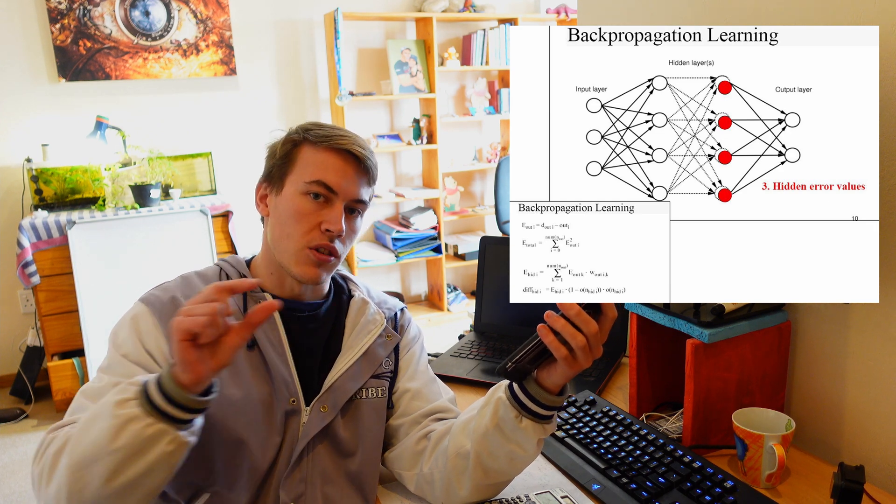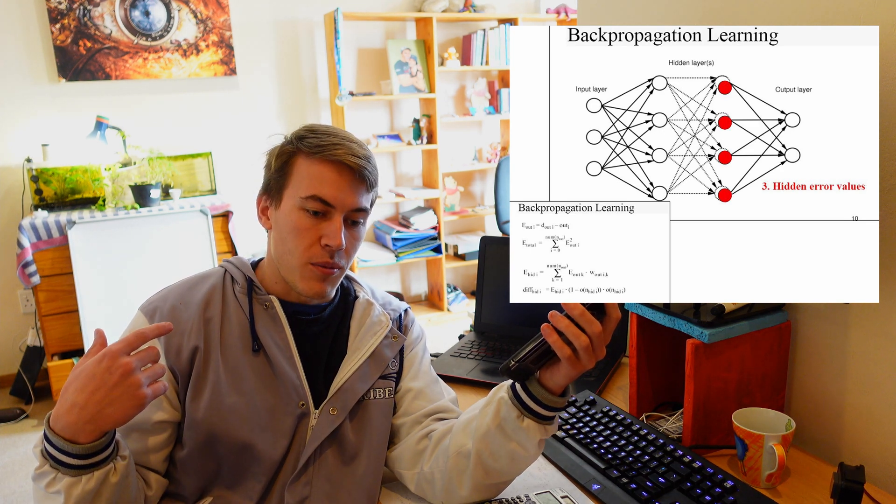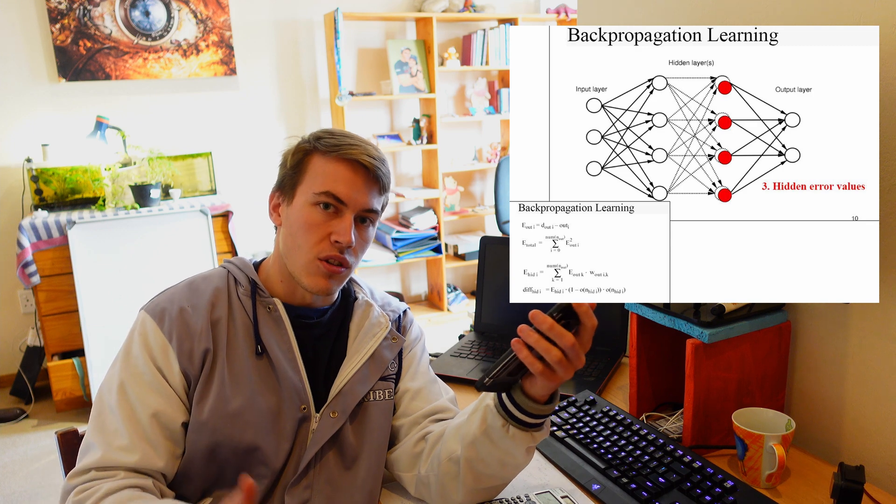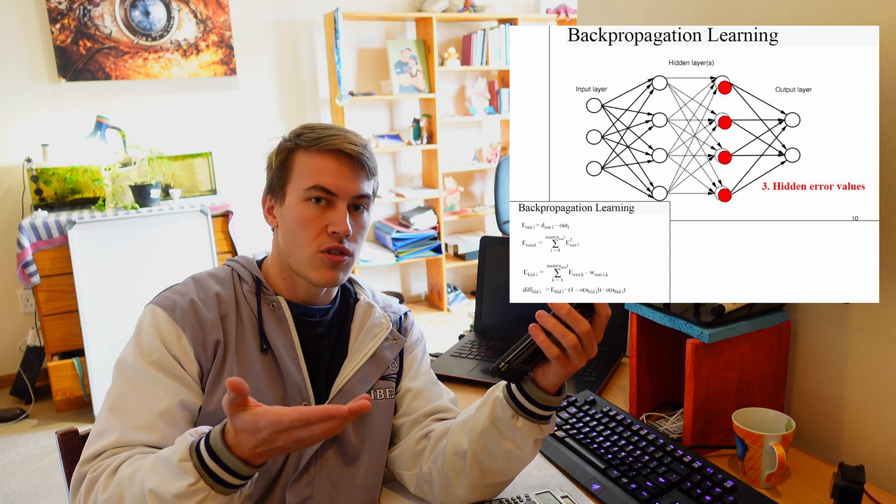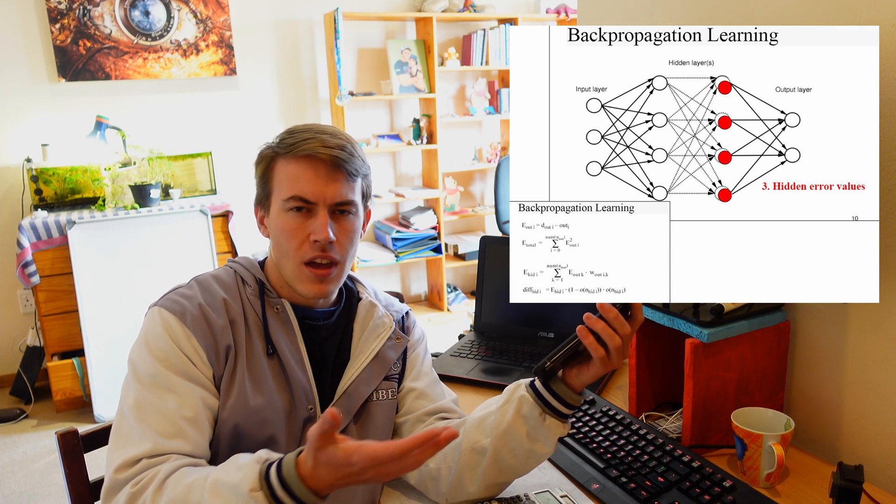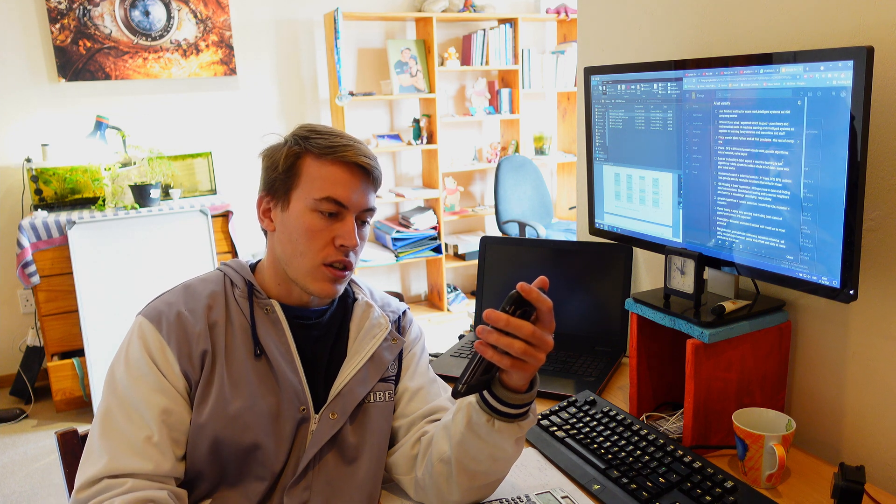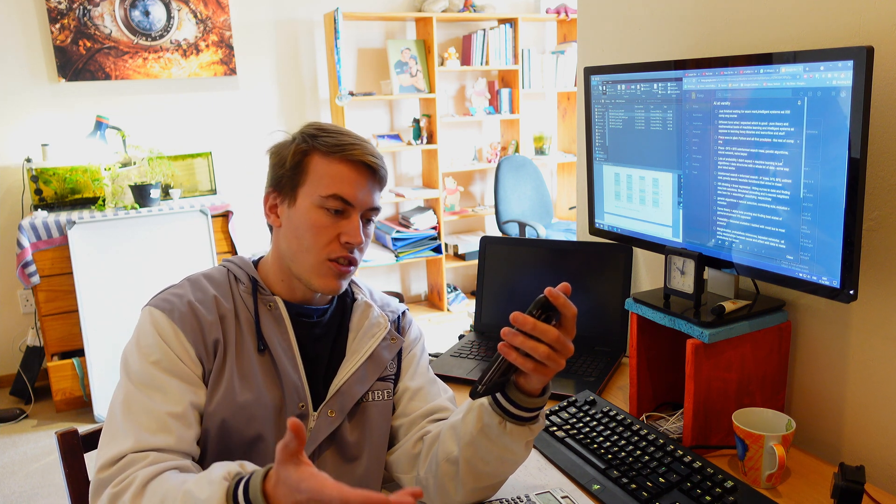If you do this for enough training data and enough computation, you can eventually train your neural network to recognize a new picture of a cat as being a cat or a new picture of a dog as not being a cat. I'm just using a basic example like that.